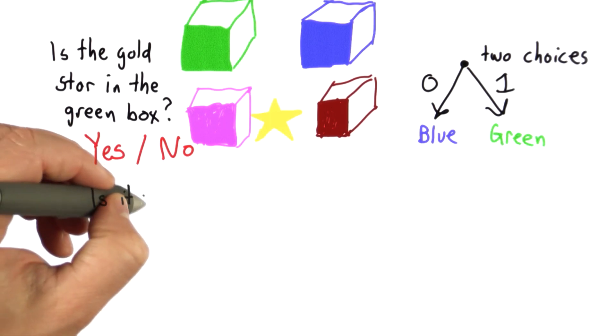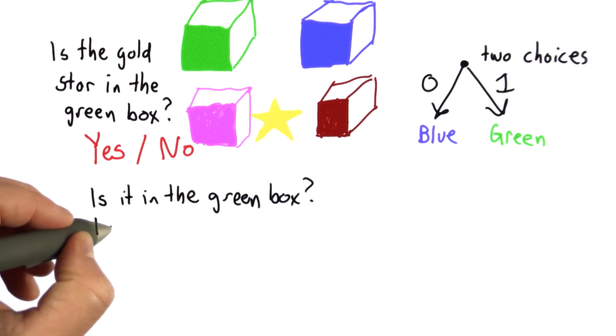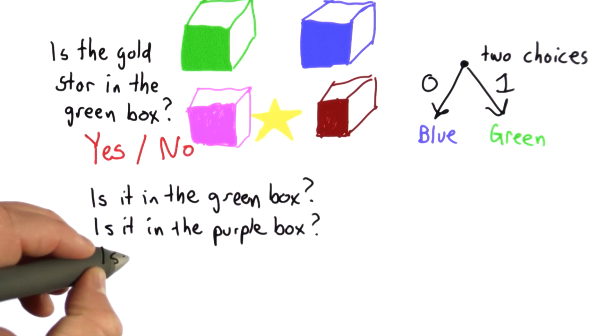is it in the green box? We could ask, is it in the purple box? We could ask, is it in the blue box?